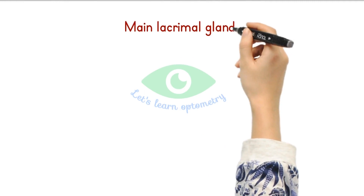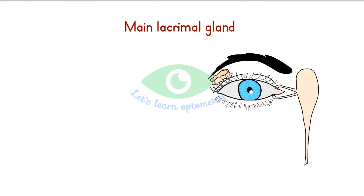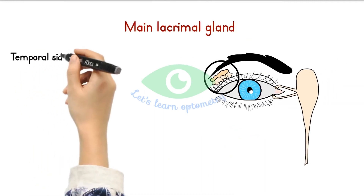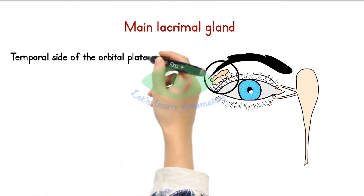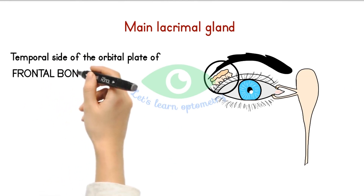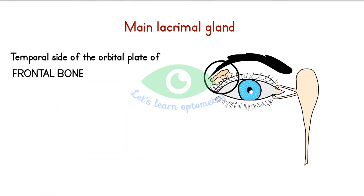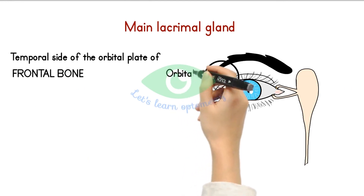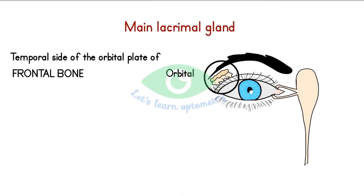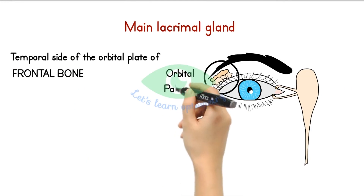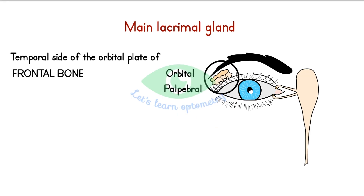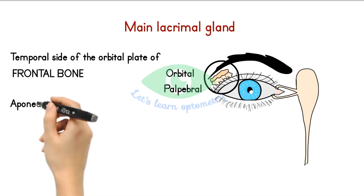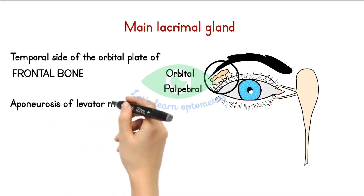The main lacrimal gland is located in a depression on the temporal side of the orbital plate of the frontal bone. The gland is divided into two portions: the superior orbital portion and the inferior palpebral portion. It is divided by the upper aponeurosis of the levator muscle.